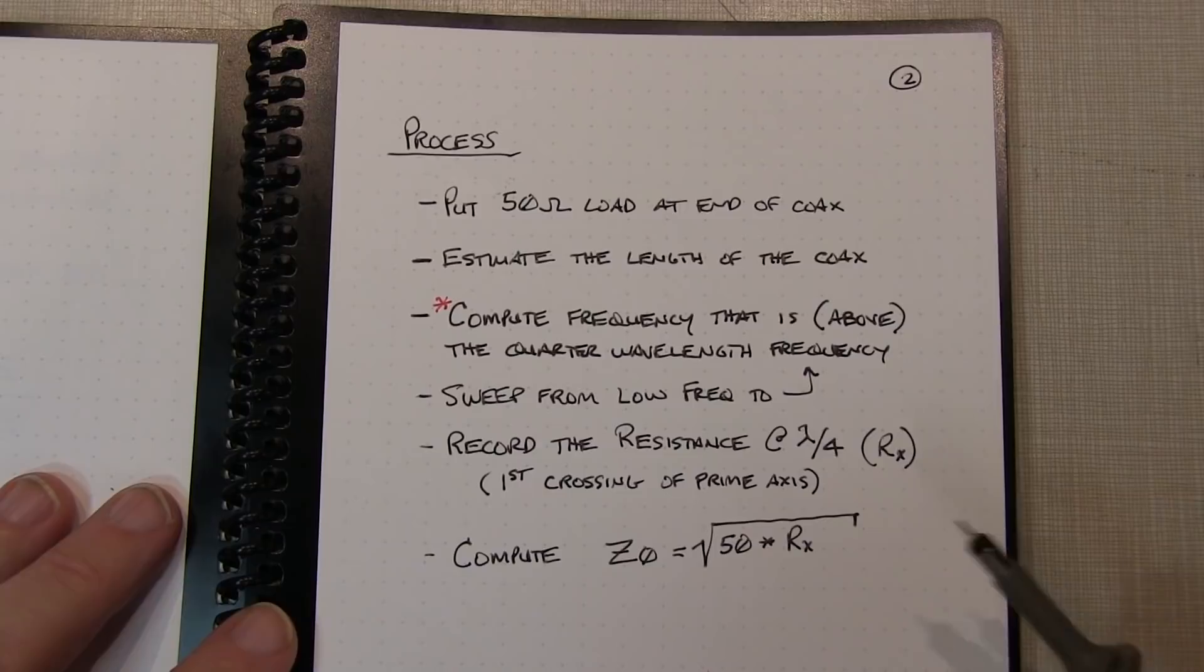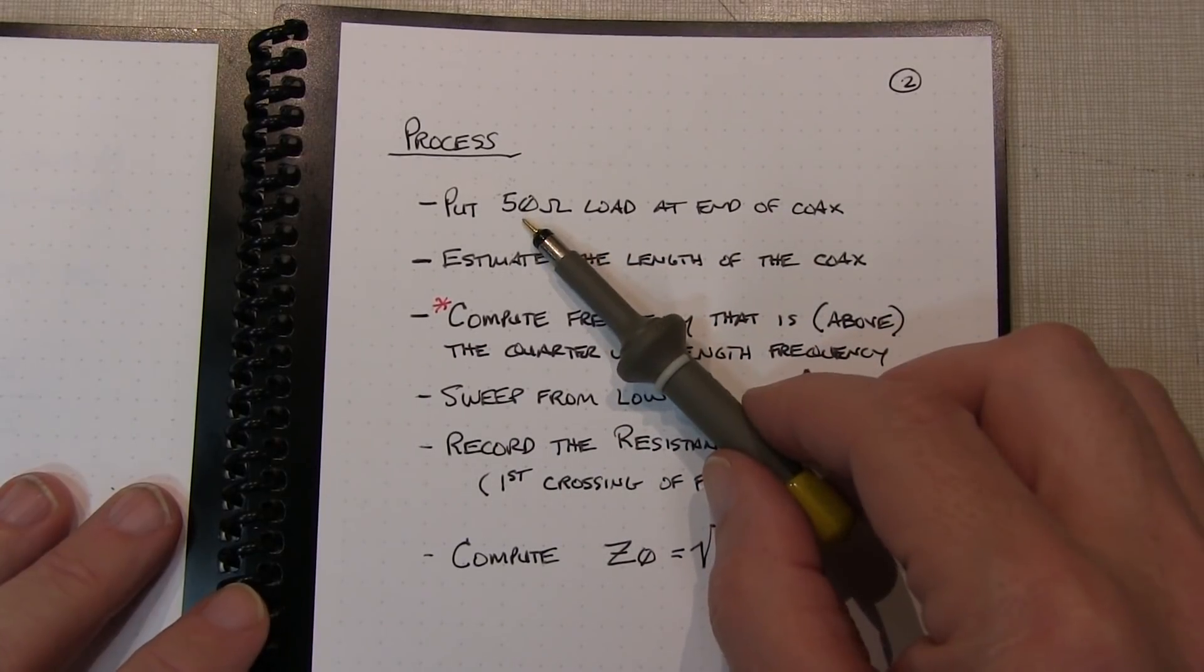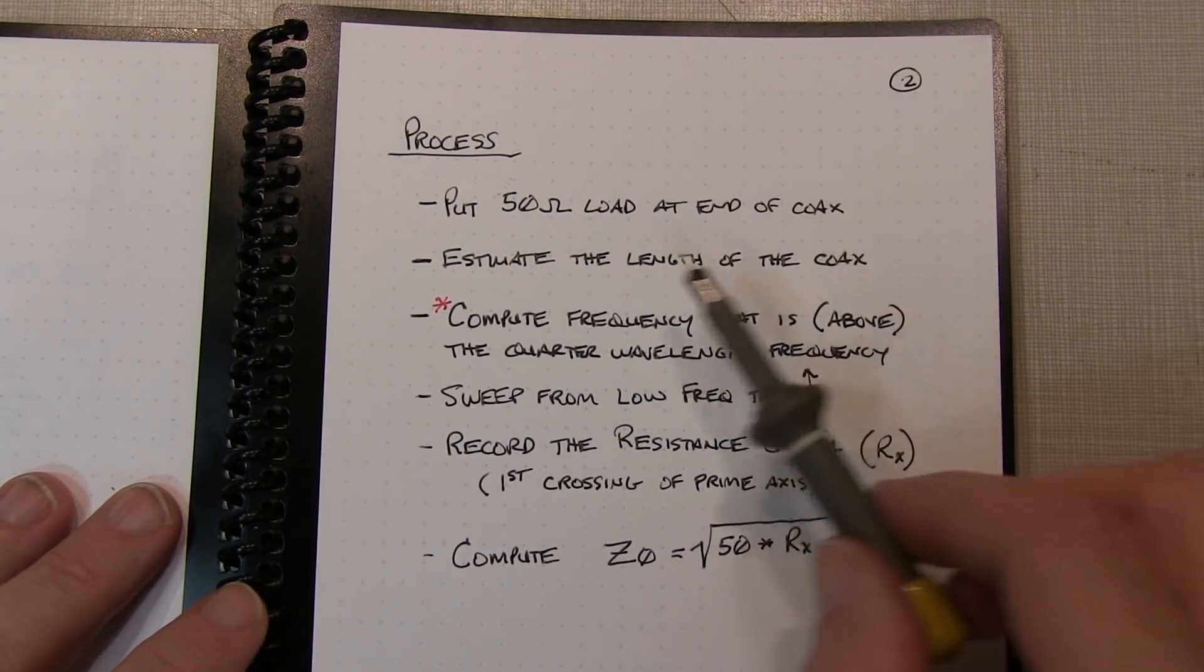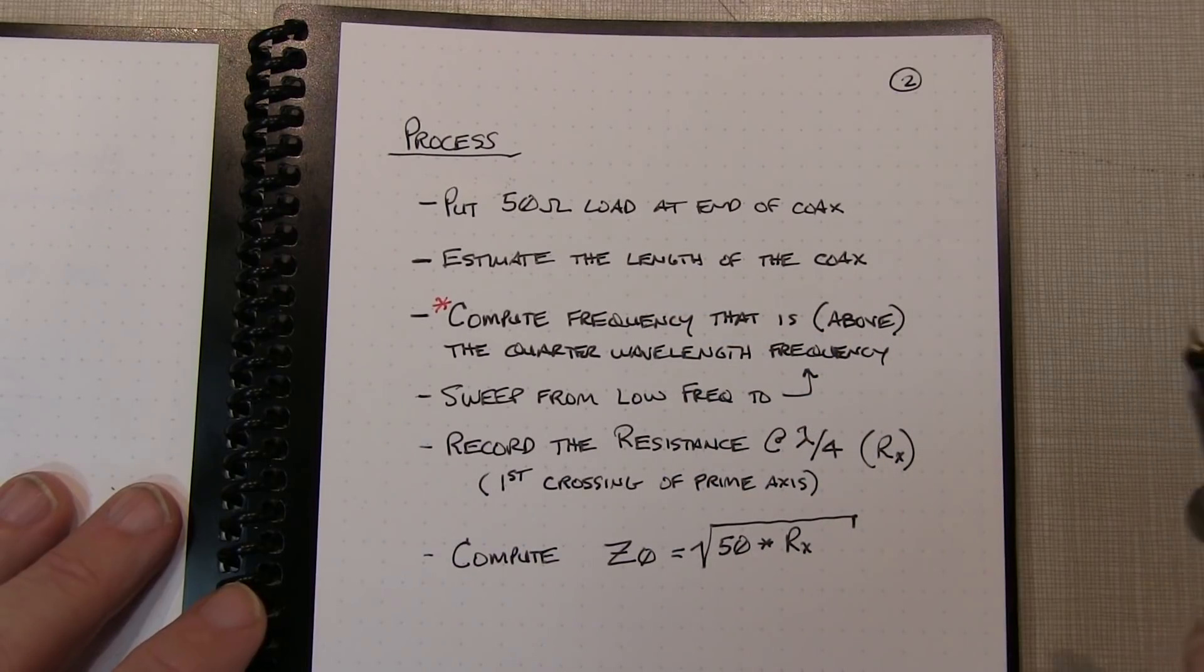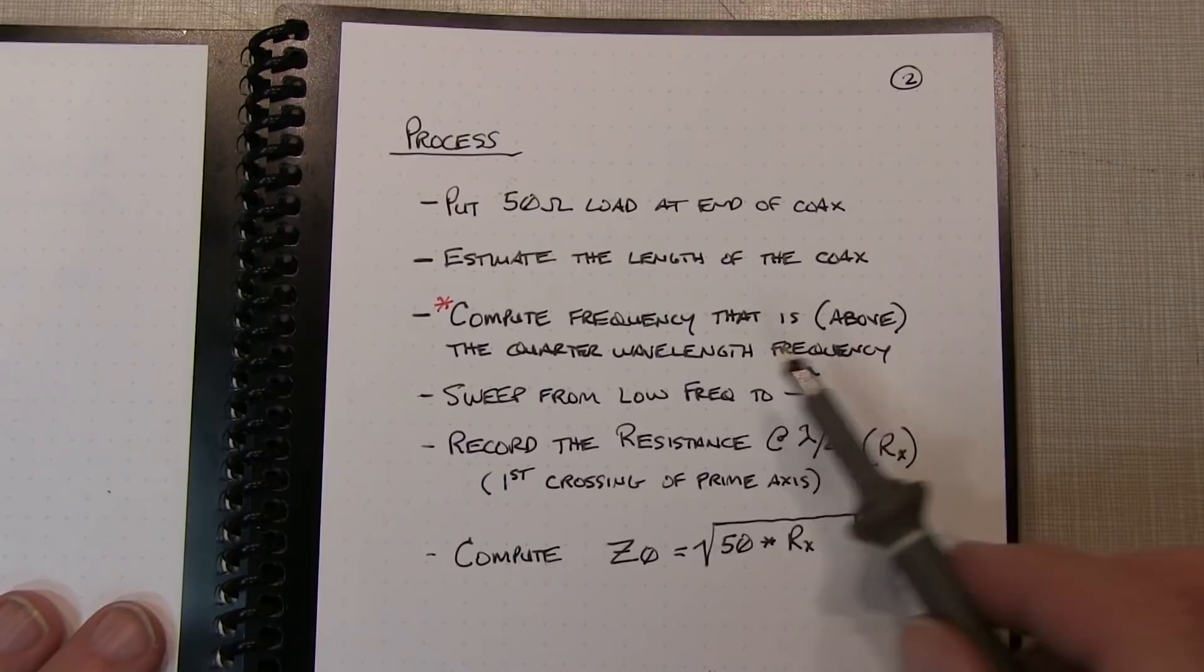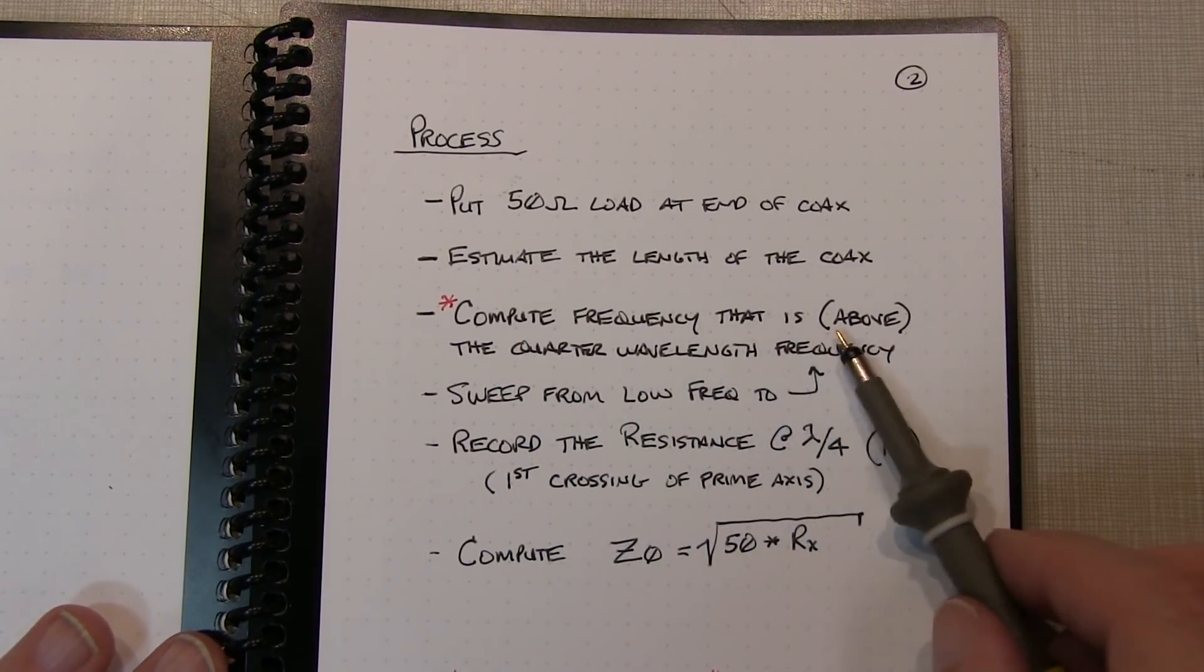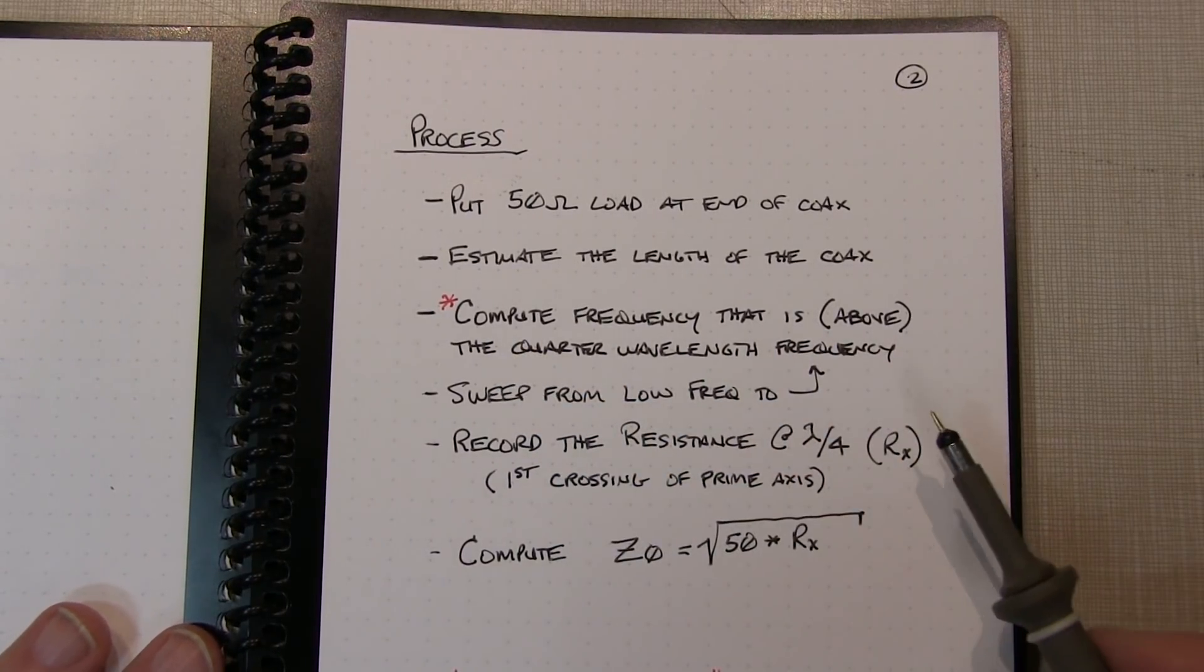So the process is pretty simple. We put a 50 ohm load at the end of the coax. We estimate the length of that coax. We can measure it or even just estimate it. And then from that, compute a frequency that is above the quarter-wavelength line frequency.